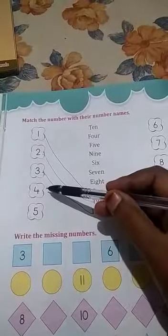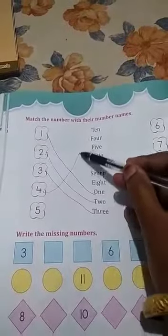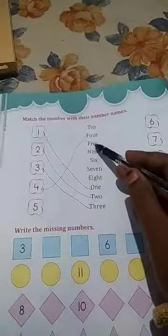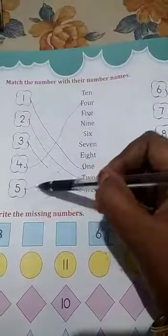4. F-O-U-R-4. Here is a 4 children. F-O-U-R-4. 5. F-I-V-E-5. F-I-V-E-5.